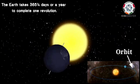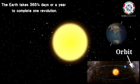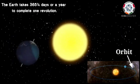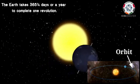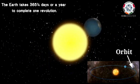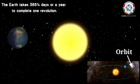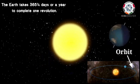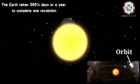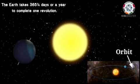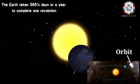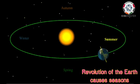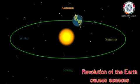While rotating on its axis, the Earth also moves around the Sun. The Earth moves around the Sun in a fixed path called an orbit. This movement of the Earth in an orbit is called revolution. Rotation and revolution take place at the same time. The Earth takes about 365 and a quarter days to complete one revolution. This period is called a year.